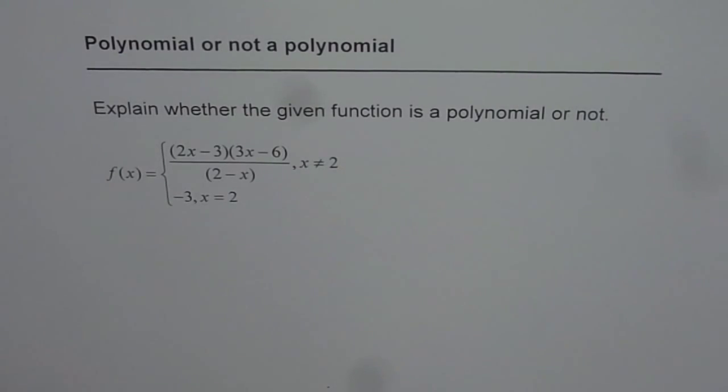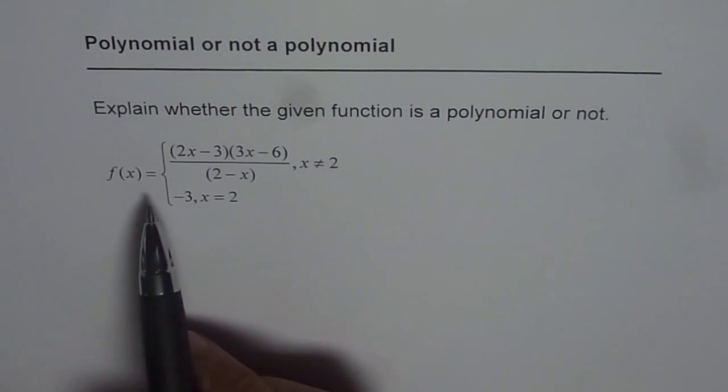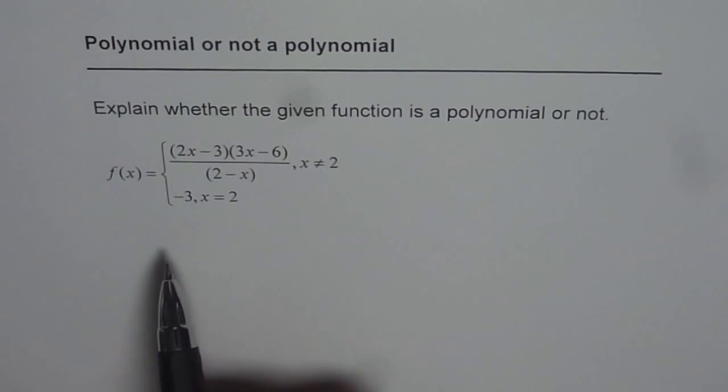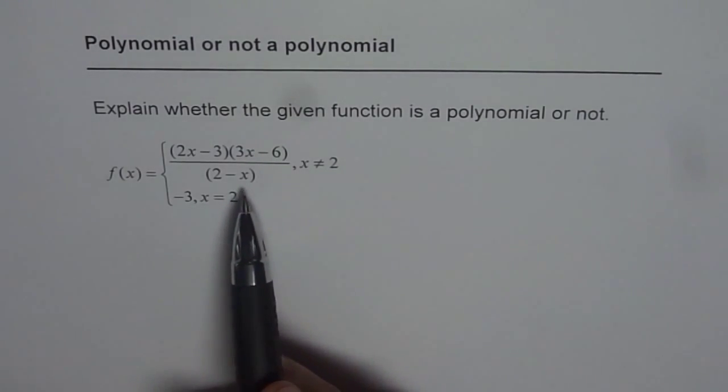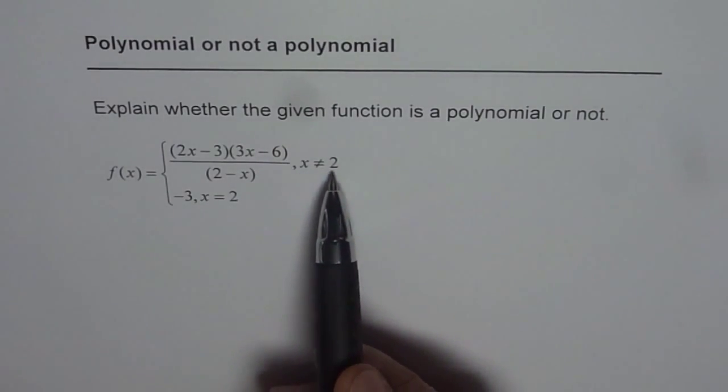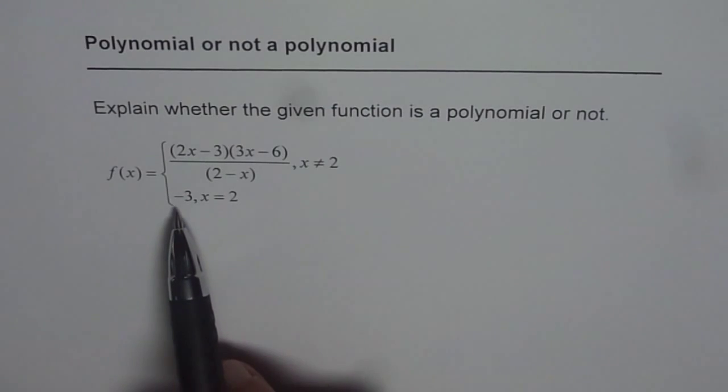Polynomial or not a polynomial? Explain whether the given function is a polynomial or not. f of x is like a piecewise function: f of x equals 2x minus 3 times 3x minus 6 divided by 2 minus x for x not equal to 2, and is equal to minus 3 when x is equal to 2.